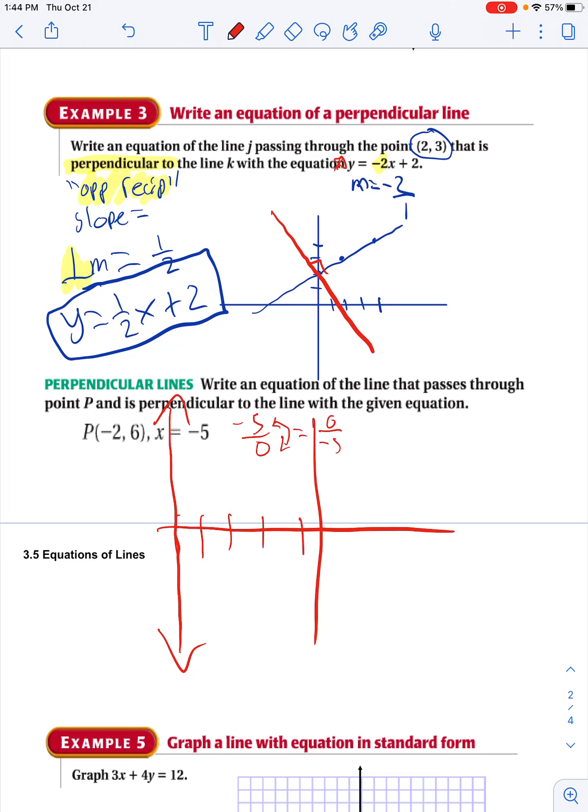And anything divided by, or 0 divided by anything is 0. So my perpendicular slope, again, looking at my Y-intercept, my Y-intercept is 6. 1, 2, 3, 4, 5, 6 is going to be a horizontal line.